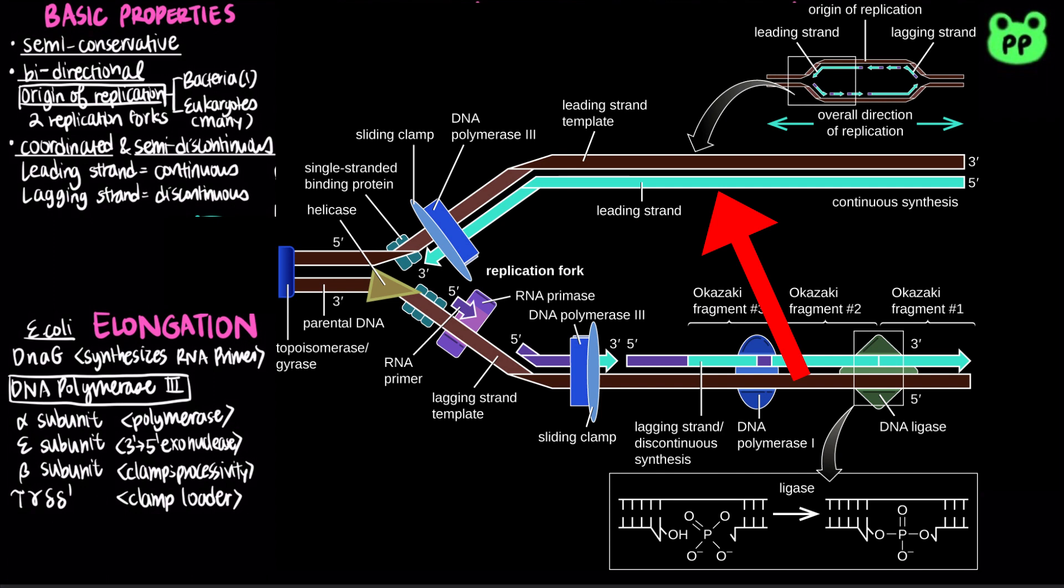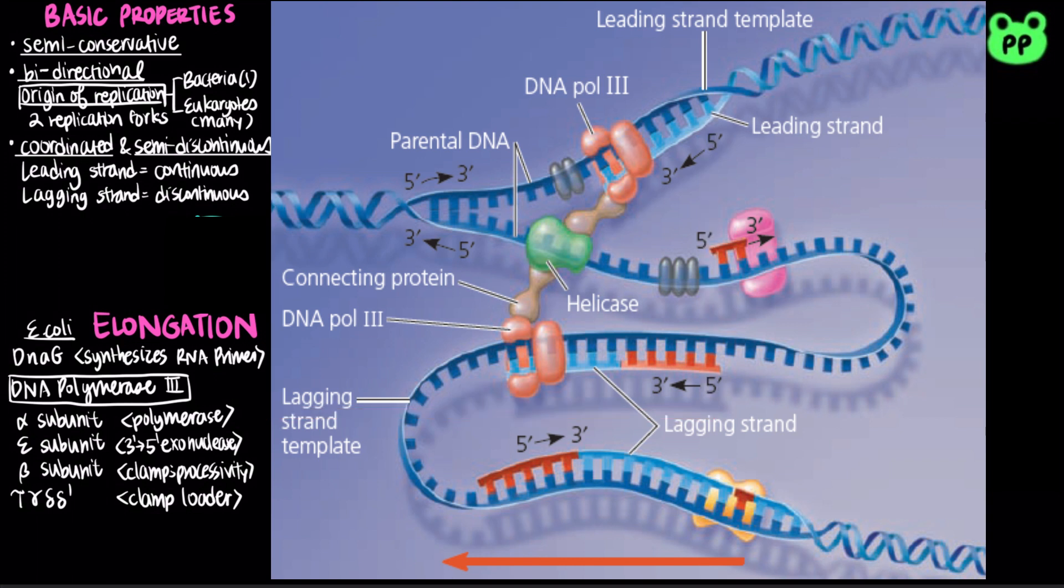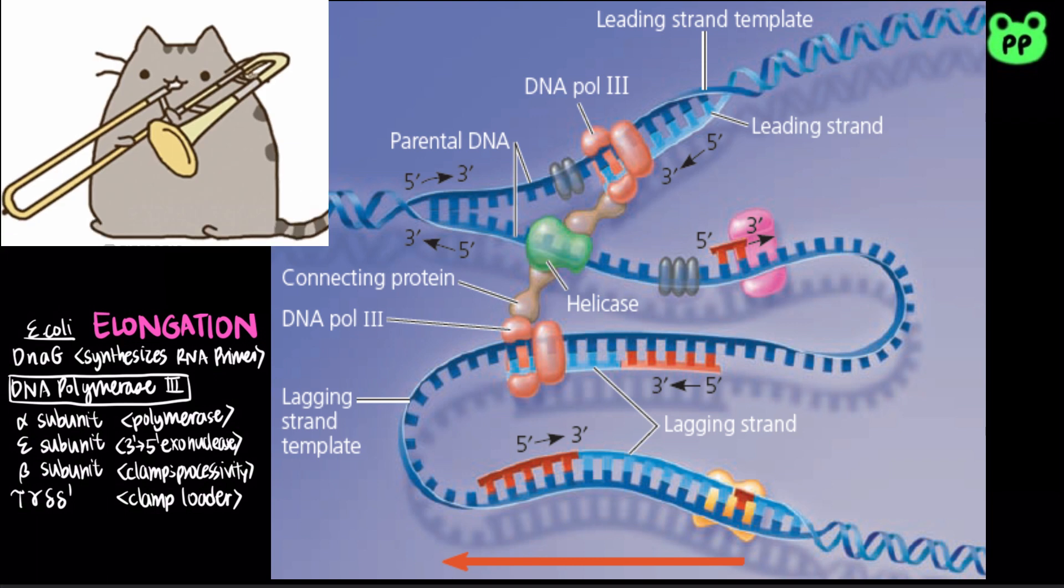The leading strand is synthesized continuously and only requires one primer, but the lagging strand is synthesized discontinuously and requires multiple primers for each Okazaki fragment. Two DNA polymerase 3 molecules work together in a complex with helicase and other proteins to coordinate the synthesis of leading and lagging strand. This is known as the trombone model, in which the lagging strand DNA loops through the complex resembling the slide of a trombone.